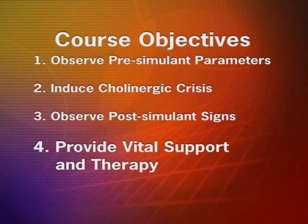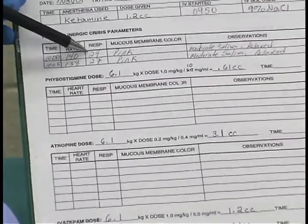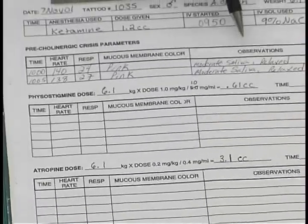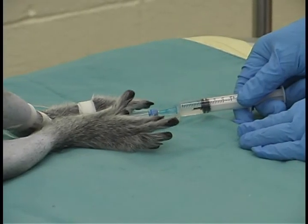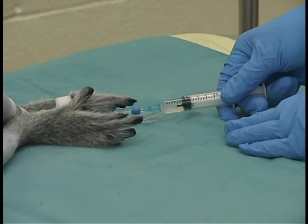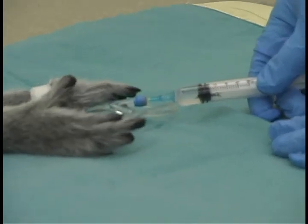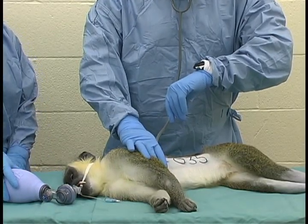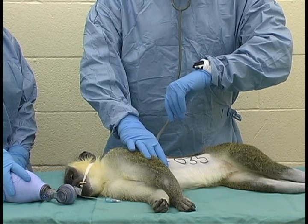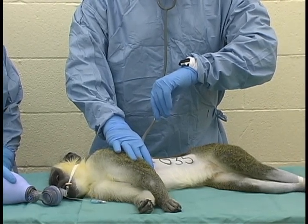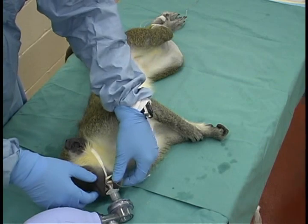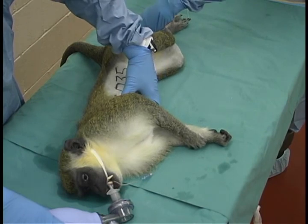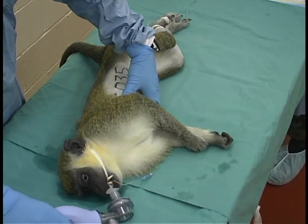Objective four is providing vital support and therapy. When the students have observed and recorded all clinical signs of the induced cholinergic crisis, definitive therapy can be provided. Atropine sulfate at a dose of 0.2 milligrams per kilogram in a pre-measured syringe is injected into the vascular line without recapping the needle. Temporary cessation of manual ventilation will allow the student to observe the atropine-induced reversal of the muscarinic clinical signs of the cholinergic crisis. Ventilatory assistance must be provided to supplement the respiratory efforts made by the animal until the animal's own respirations can maintain normal tissue oxygenation.